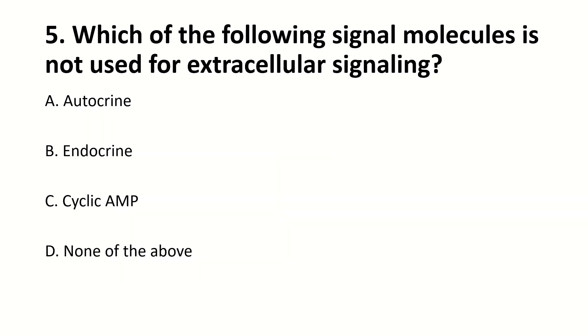Which of the following signal molecules is not used for extracellular signaling? Right answer is C — cyclic AMP.